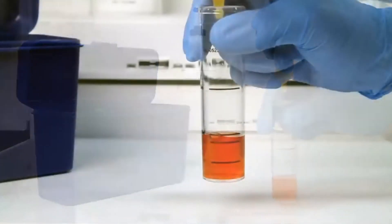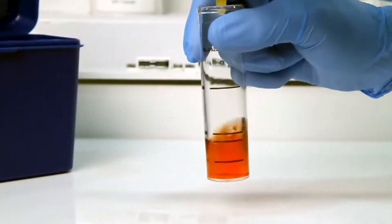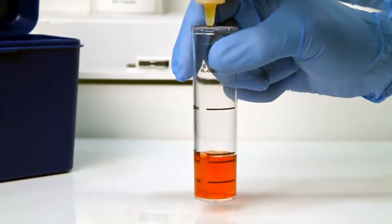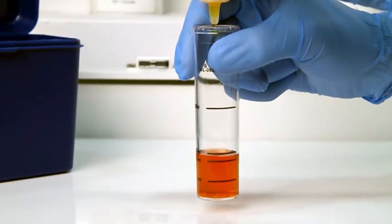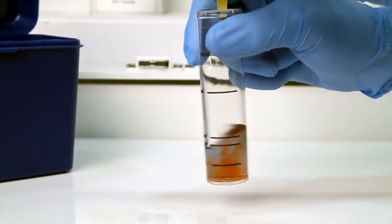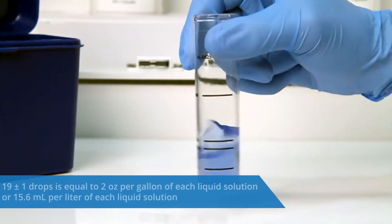After the addition of each drop of titrant, you want to swirl the vial to make sure the sample is properly mixed. Count the number of drops during this step. The titration is complete when the sample changes from orange to blue.